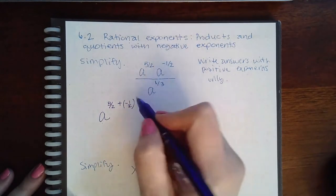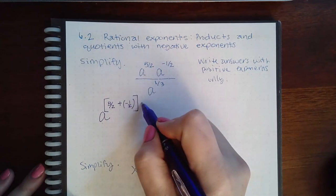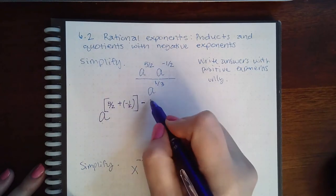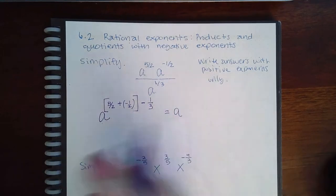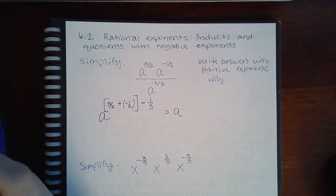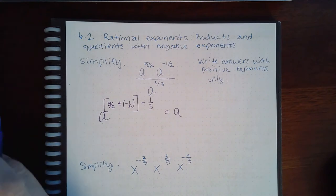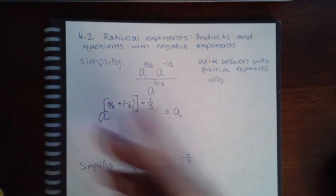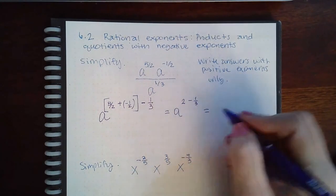And then whatever you get in the top, that top exponent, you'll have to subtract the bottom exponent from it. So this becomes five over two plus a negative one over two, simplifies down to two, and then I have to minus one third from it.